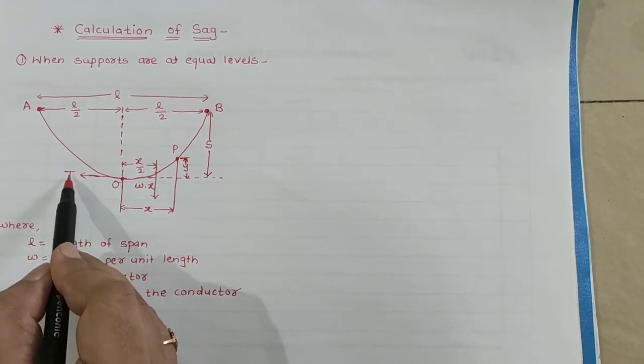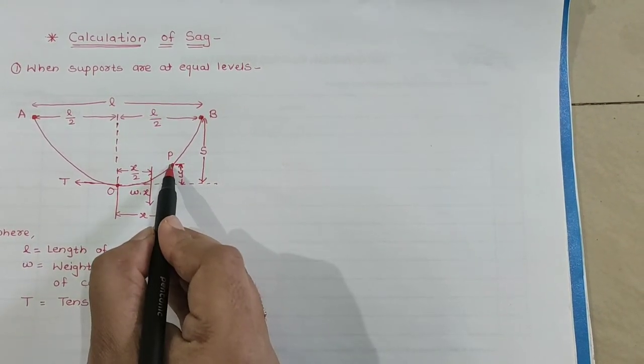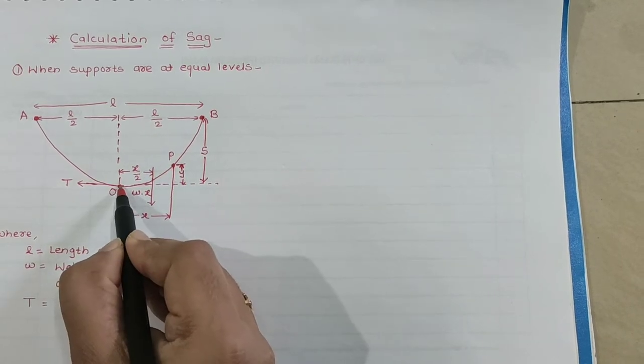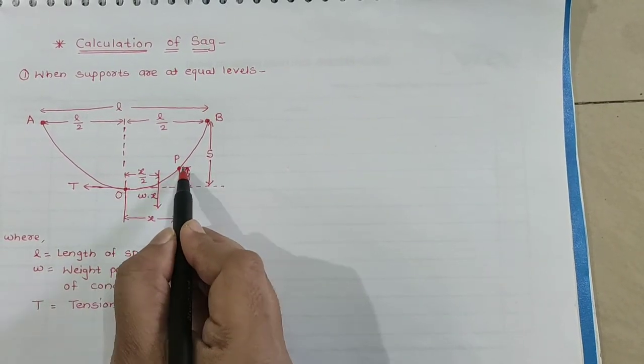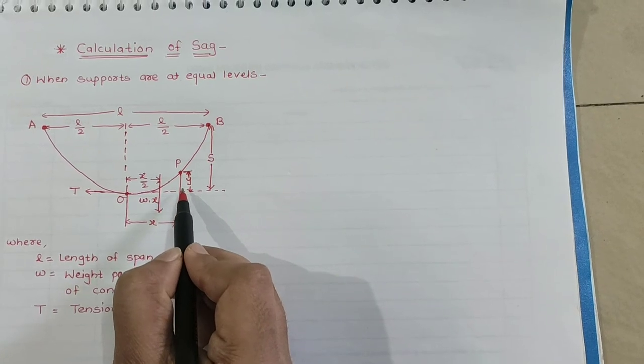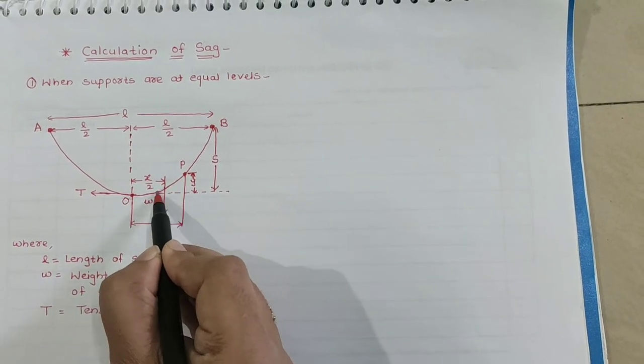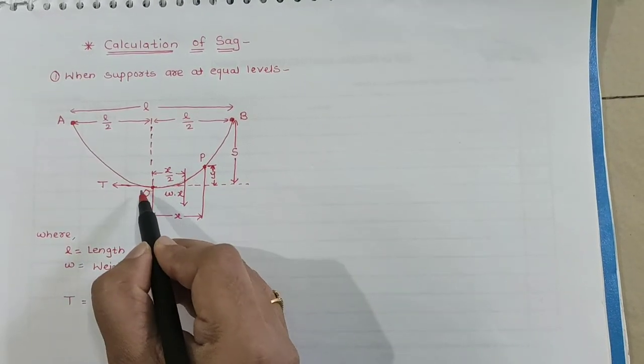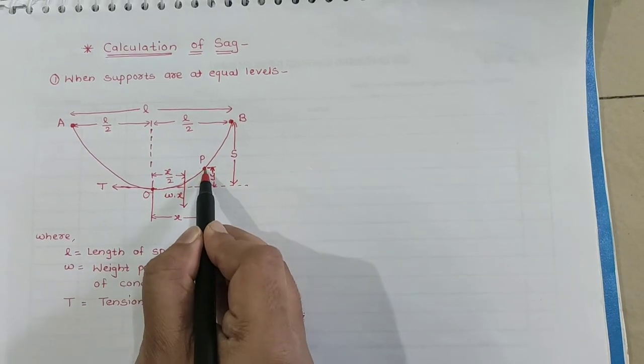Here consider a point P on the conductor. Taking the lowest point O as the origin, let the coordinates of point P be X and Y. The curvature is so small, so consider it equal to its horizontal projection. That is, OP is equal to X.